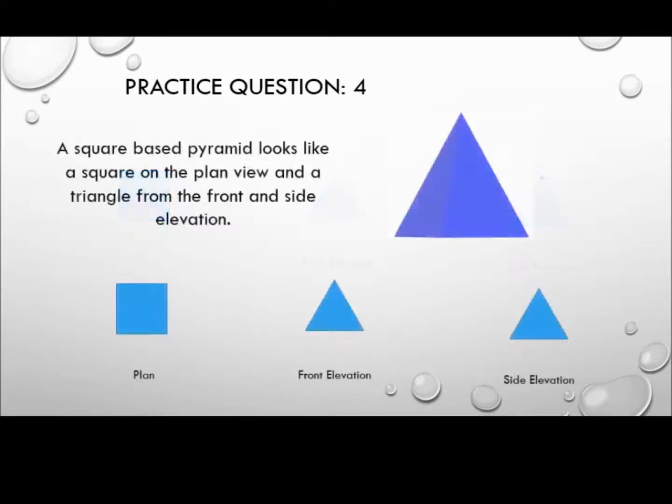A square-based pyramid looks like a square on the plan view and a triangle from the front and side elevation.